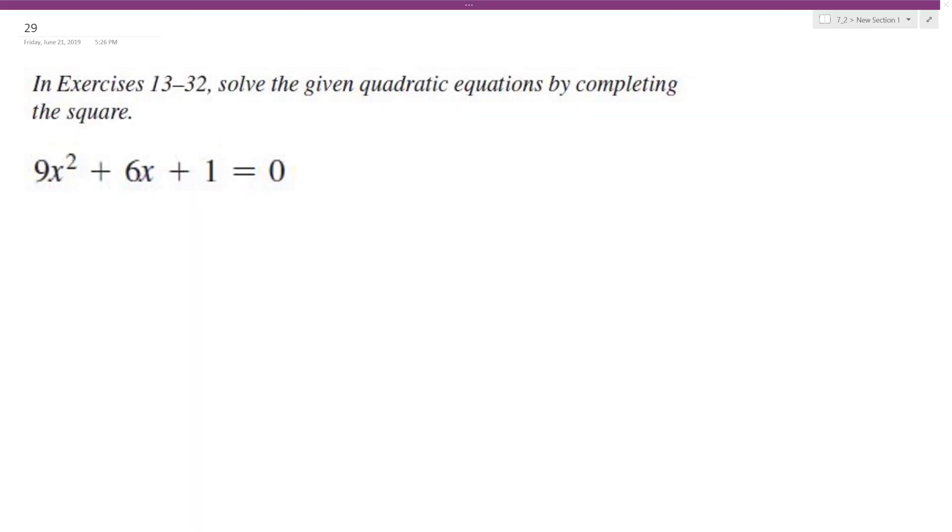Let's solve the following problem by completing the square. Well, starting off, I already know this is going to be a 3x plus 1 squared. So it should be a double root of 1 third, or negative 1 third. But let's go ahead and do this.